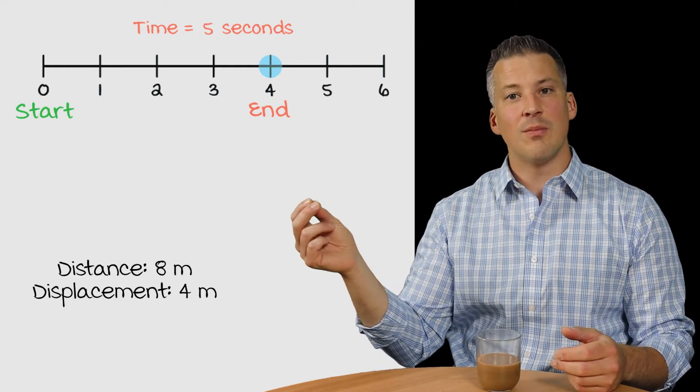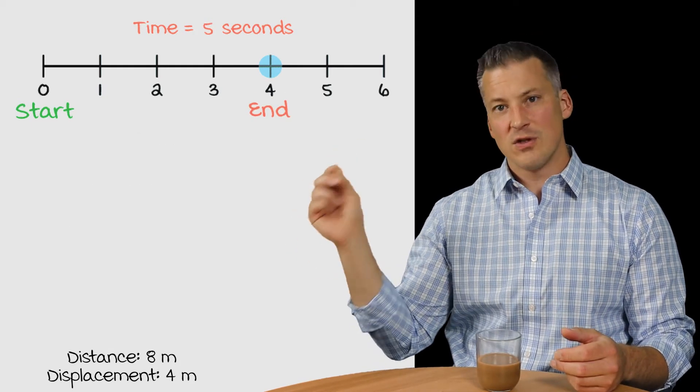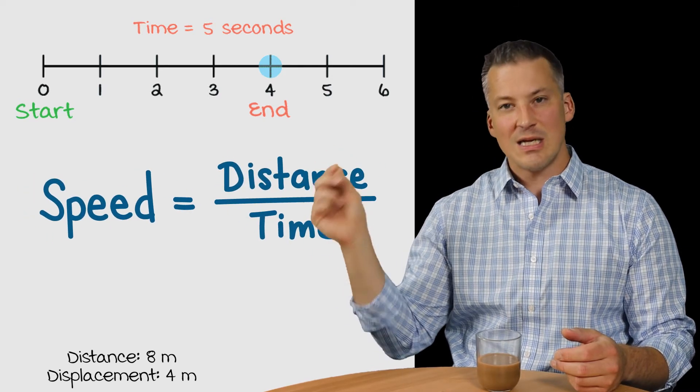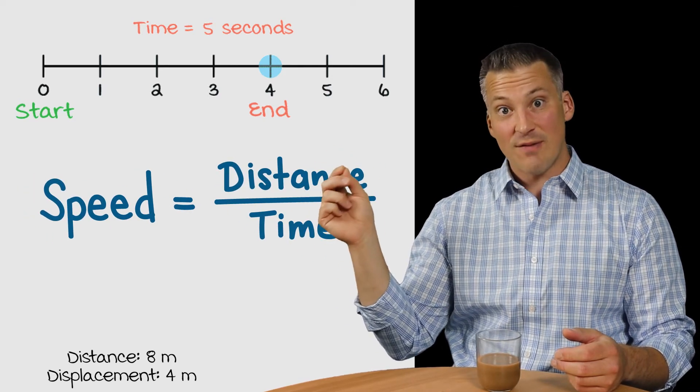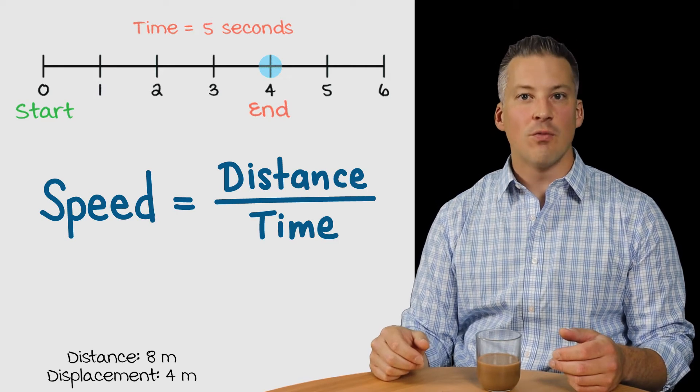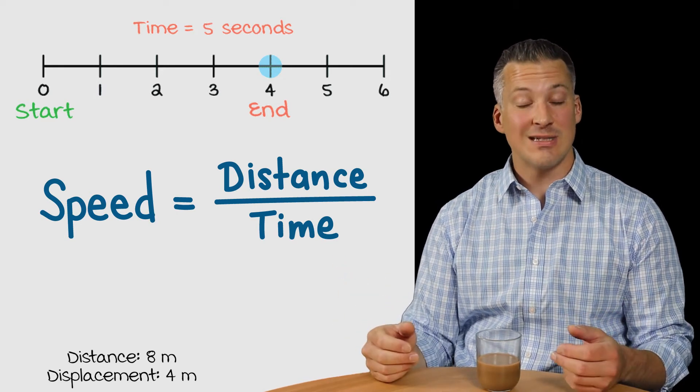So, it turns out that we got to know the two formulas. So, the formula for speed. Speed is equal to the distance traveled divided by the time over which it took the object to cover that distance.